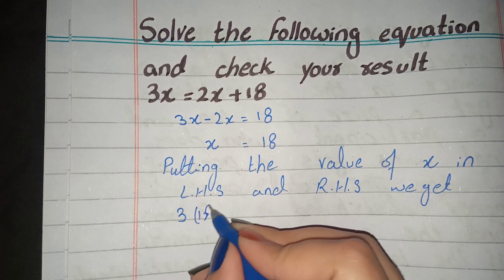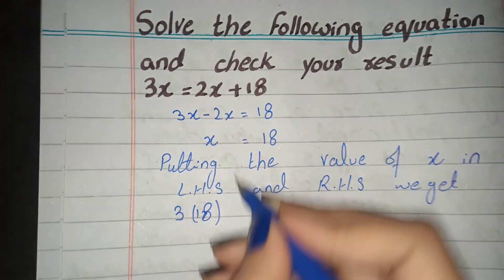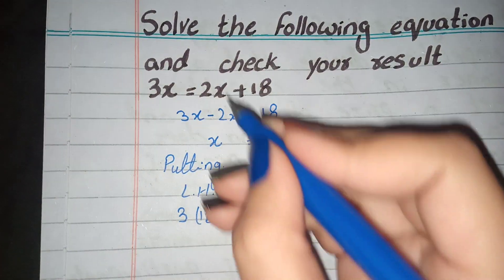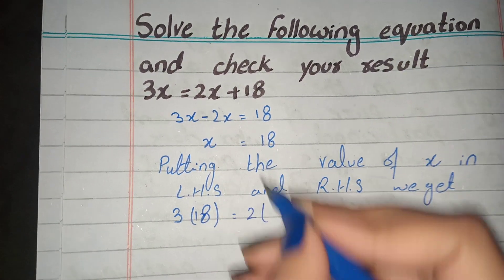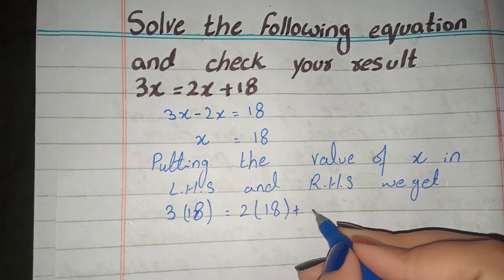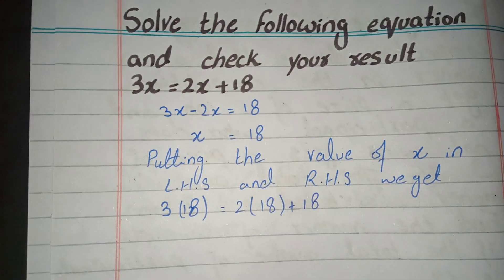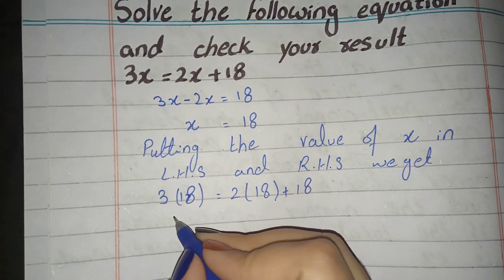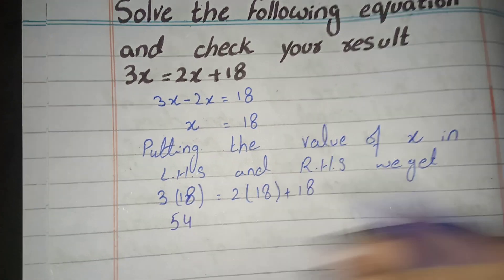This equals 2 plus x is 18 plus 18. Now we have to solve 18 times 3, we have 54.